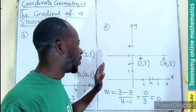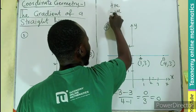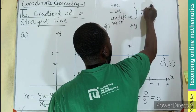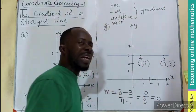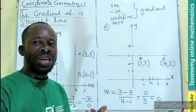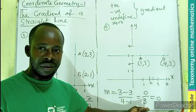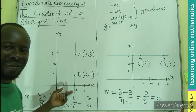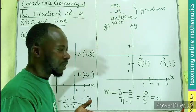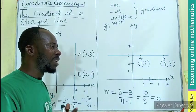So these are all straight lines. We can have a positive gradient, a negative gradient, an undefined gradient, or a zero gradient. These are the four different types of gradient depending on the direction of the straight line. Take note: if the straight line is parallel to the x-axis we have a zero gradient; if it is perpendicular to the x-axis we have an undefined gradient; if it is rising from the left and falling on the right it is positive; if it is rising from the right and falling on the left it is negative.